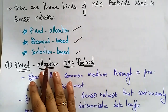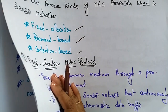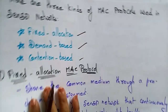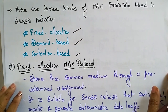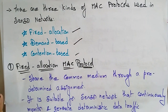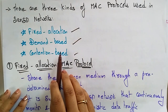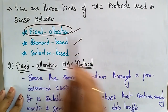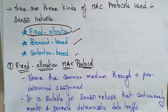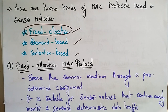In ad hoc networks, the MAC protocols are contention-based. But in wireless sensor networks, the MAC protocols used are of three kinds: fixed allocation, demand-based, and contention-based. Let's see one by one. What is the fixed allocation MAC protocol and how is it used to reduce energy consumption in sensor networks?